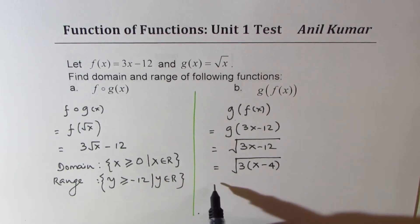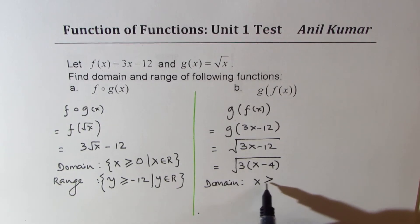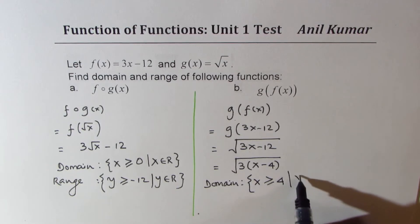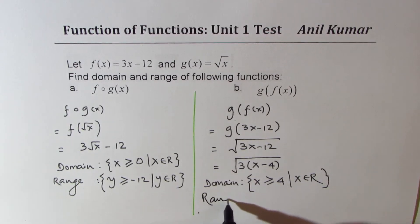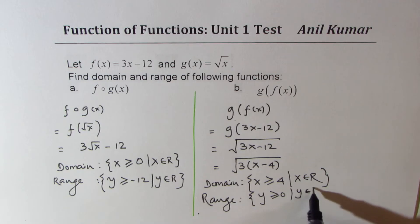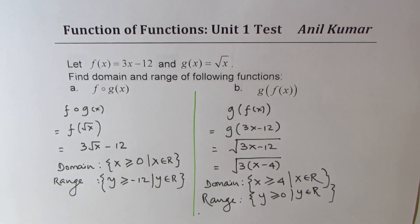Now, that gives you that the domain here is x is greater than or equal to 4, where x belongs to real numbers, and the range is y is greater than or equal to 0, where y belongs to real numbers. So it's kind of better to really solve it. It doesn't really take much time, but make sure that you get the right answer.